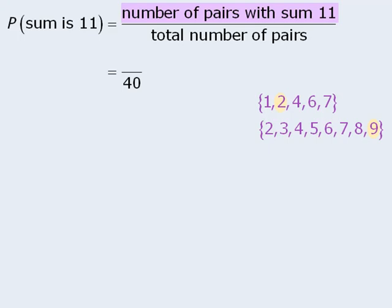Continuing with this pattern, we find another pair here. Here's a third pair, and here's a fourth pair. So there are four outcomes where the pair of numbers add to be 11.